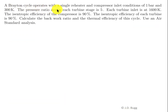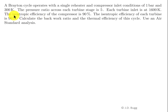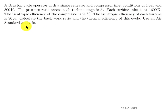A Brayton cycle operates with a single reheater and compressor inlet conditions of 1 bar and 300 K. The pressure ratio across each turbine stage is 5, and each turbine inlet is at 1600 K. The isentropic efficiency of the compressor is 90%, and the isentropic efficiency of each turbine is also 90%. Calculate the back work ratio and the thermal efficiency of this cycle using an air standard analysis.